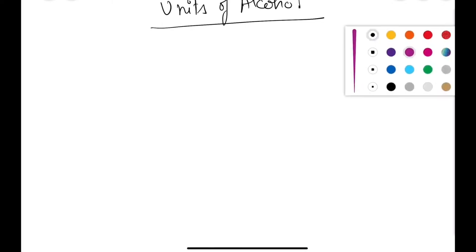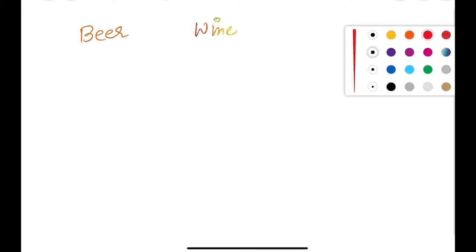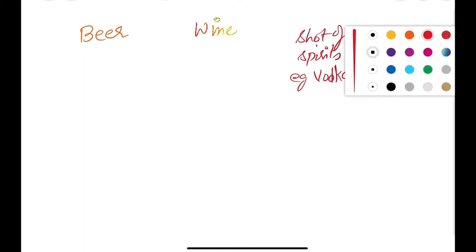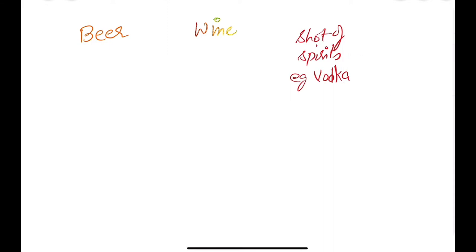We are going to talk about the most commonly used forms of alcohol: beer, wine, shots of spirits like vodka, and another form of alcohol like alcopops, also called breezer.